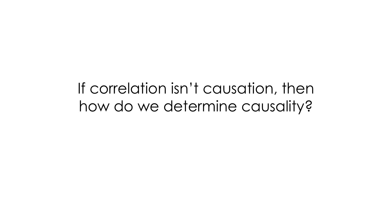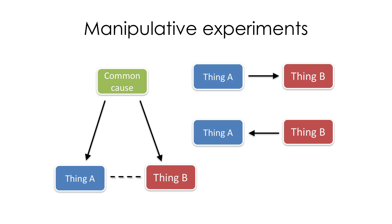So if correlation isn't causation, then how do we determine causation? What can we do? And a lot of the scientific method, of course, involves coming in and doing manipulative experiments.